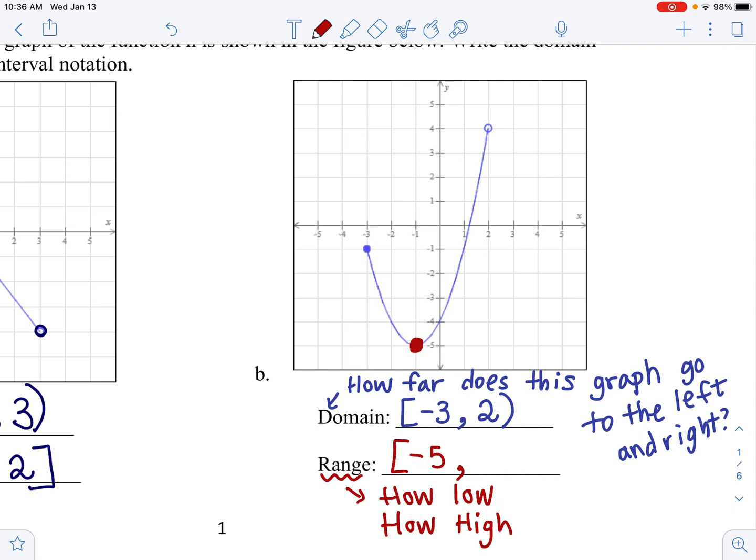All right, what's next? The next question is, how high does it go? How low was negative 5, how high does it go? The highest point is right here. And it goes as high as positive 4. So I'll say 4 is the highest point. And because we have an open circle, you see we have an open circle at that point, we're going to need to draw a parenthesis.